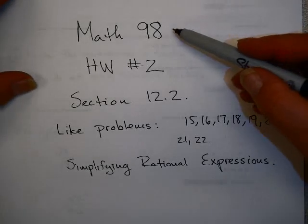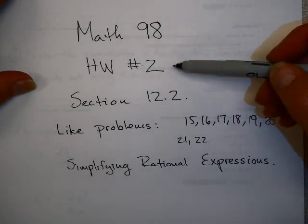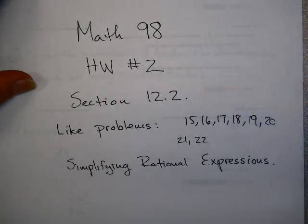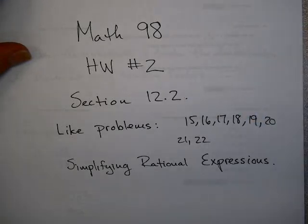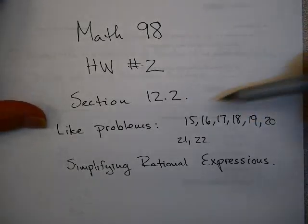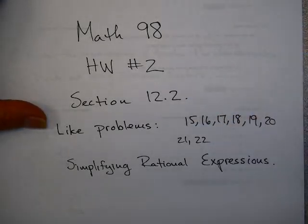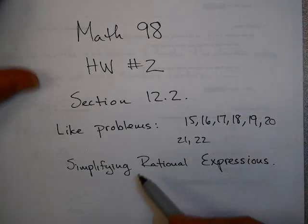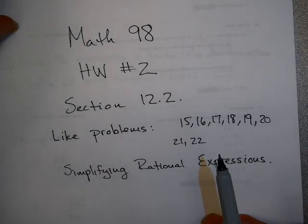In this video, we'll be looking at problems from Math 98, homework number 2, covering section 12.2. These are like problems 15 through 22 in the homework, and the topic is simplifying rational expressions.